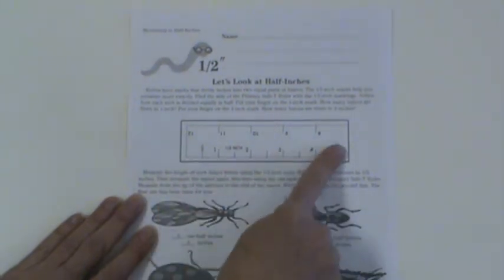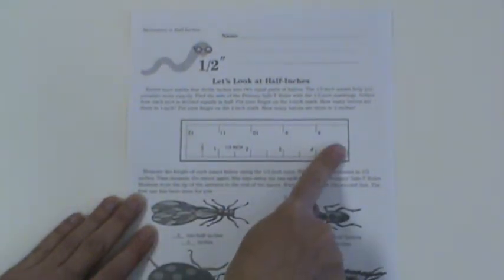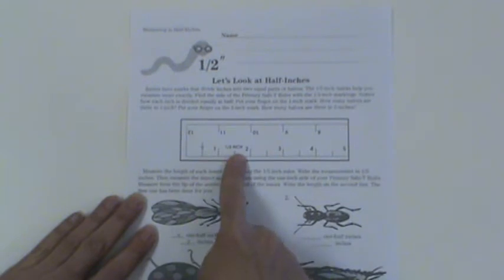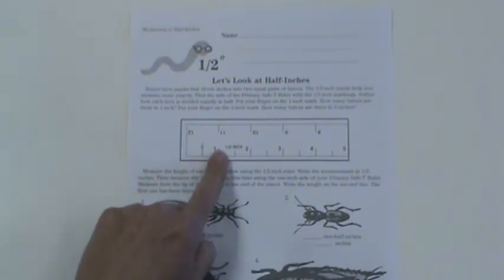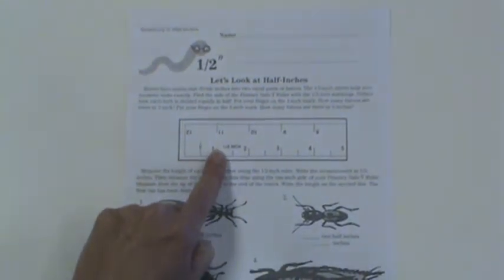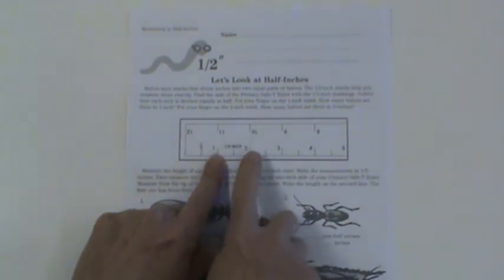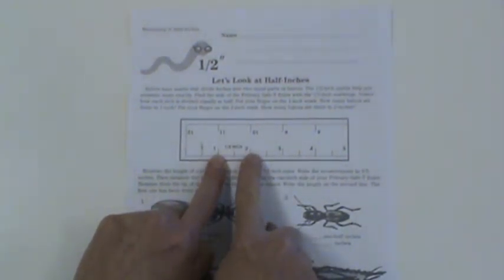On the inch side of your ruler, you can look and see how it's divided equally into halves. So if you put your finger on the one inch mark here, how many halves are there in one inch? Here's the one, here's the two, so that's one inch.